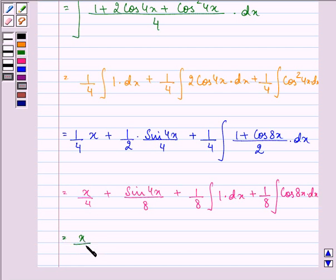Further simplifying, we have x by 4 plus sin 4x by 8 plus x by 8 plus, now here integral of cos theta is sin theta by the derivative of theta, so we have sin 8x divided by 64 plus c.